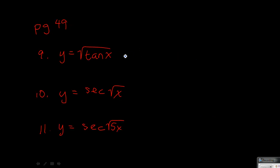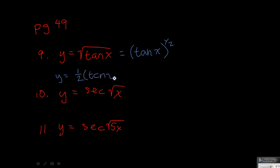On number 9, I'm going to rewrite this as tangent x to the 1 half power. So using the chain rule, it's going to be 1 half times tangent x to the negative 1 half times the derivative of the inside, which is secant squared x. So that would be your answer on that one.